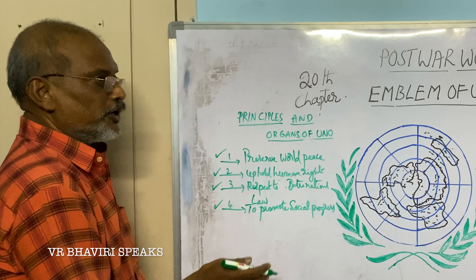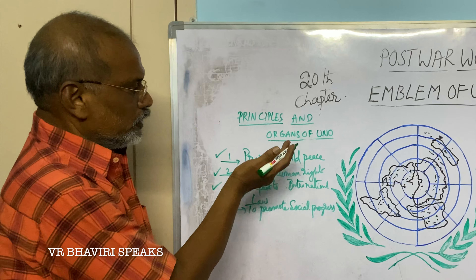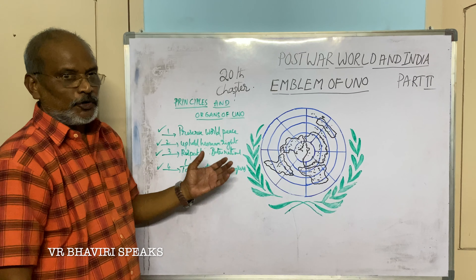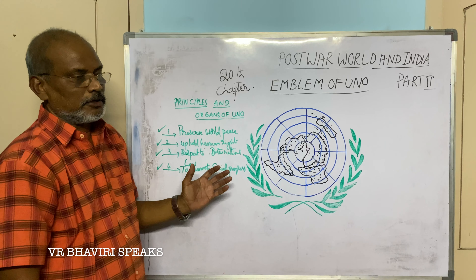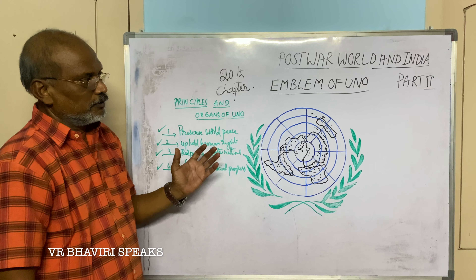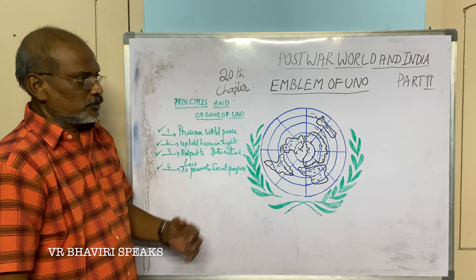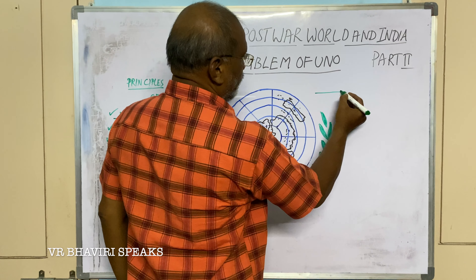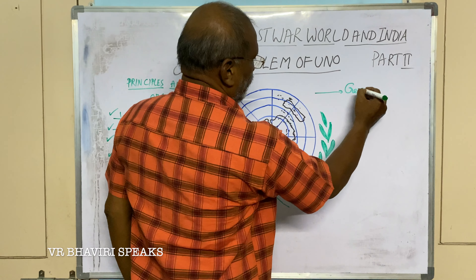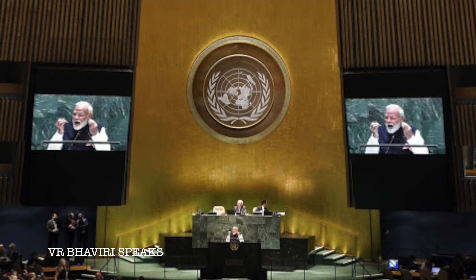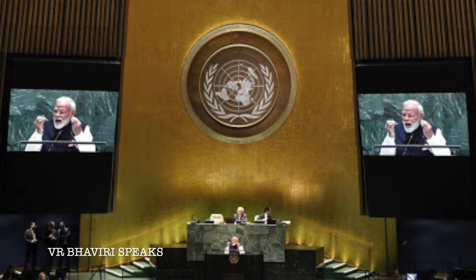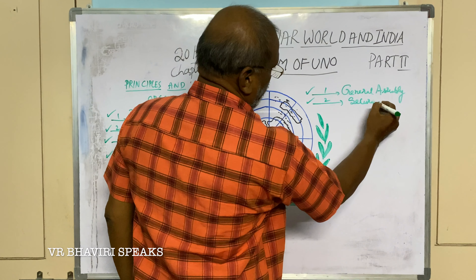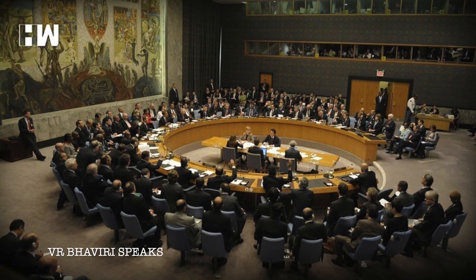United Nations Organization performs its functions through six organs. The first one is General Assembly. The second one is Security Council.